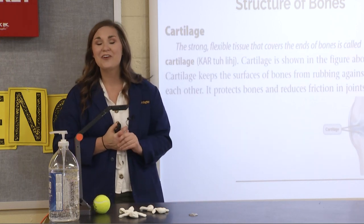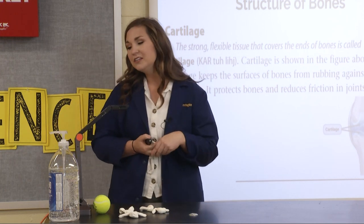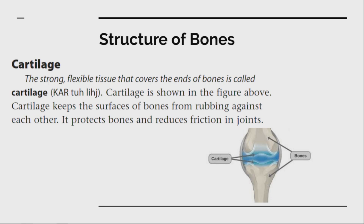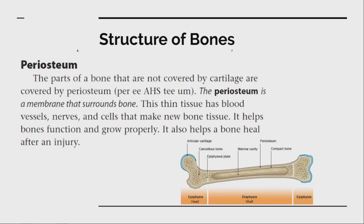A few more things about the structure of bones. We have cartilage, which is really important because it keeps our bones from rubbing together — it acts as a buffer at the ends of your bones when they connect. Periosteum is the membrane around your bones. Just like cells have membranes, so do bones. This membrane is important because it can help create new bone cells. That's great not only because we grow all the way through adulthood, but also if you break a bone, periosteum helps make more bone cells to repair it.